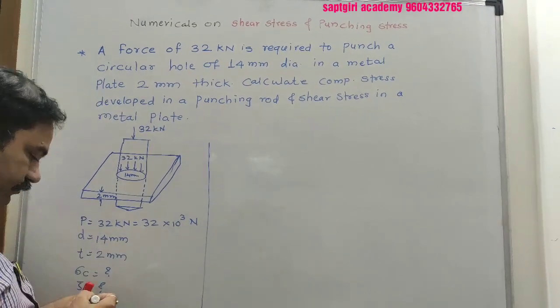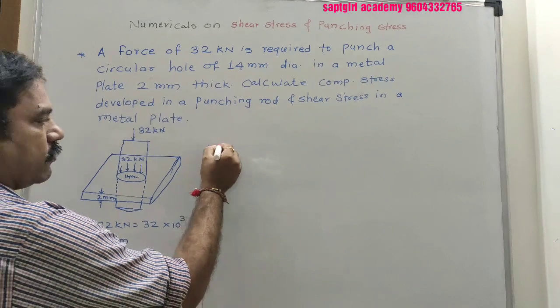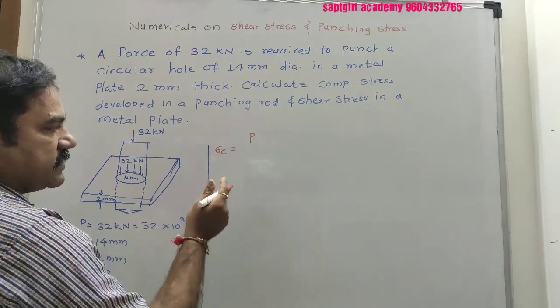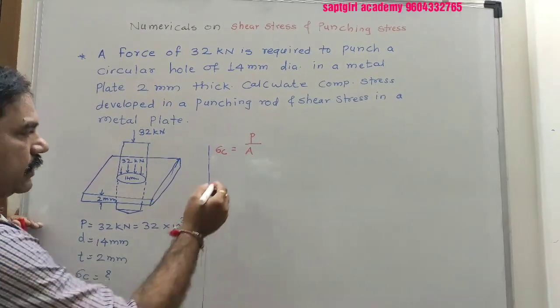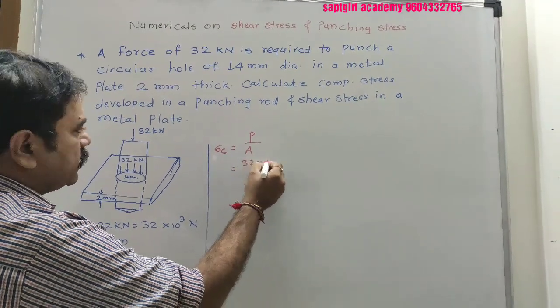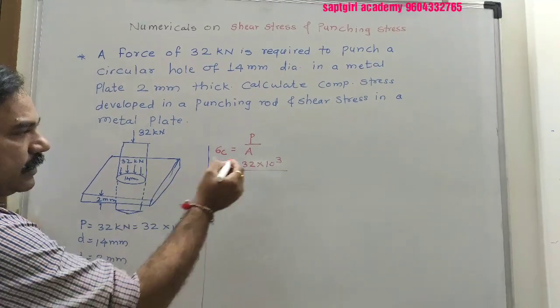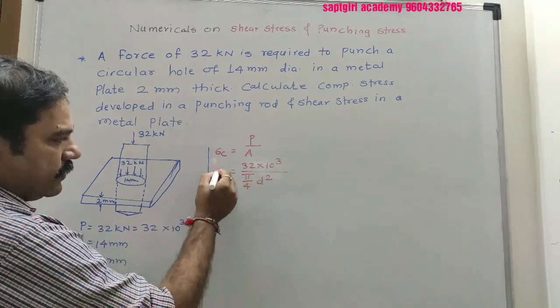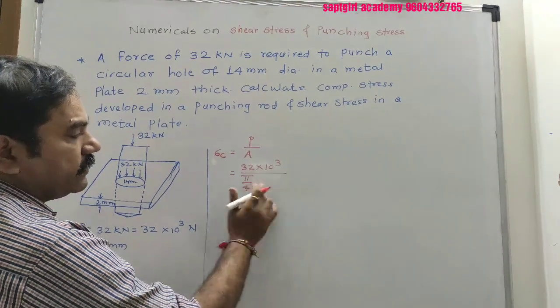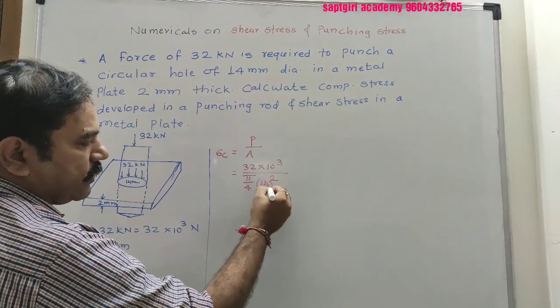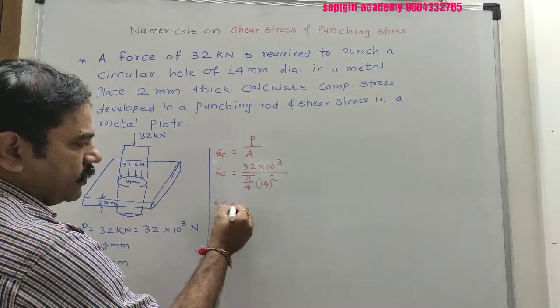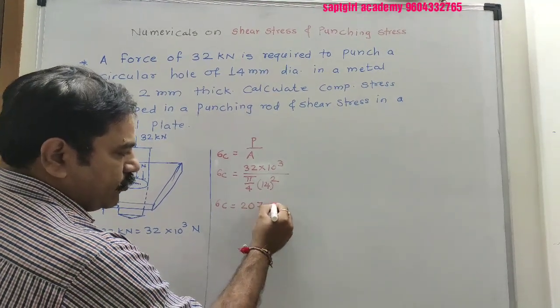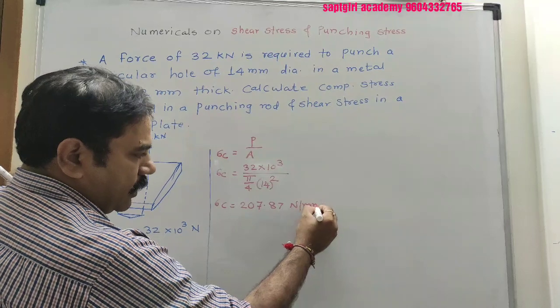We have to calculate sigma c. Sigma c equals P over A. Here, P is 32 × 10³ N. Area of the circular cross section is π/4 D². The diameter is 14 mm. By calculation, we get sigma c = 207.87 N/mm².